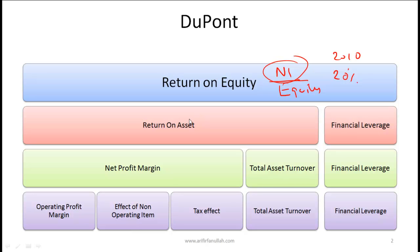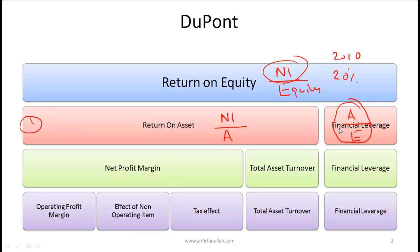The DuPont formula can be expressed in three different ways. The simplest form expresses net income over equity as return on assets multiplied by financial leverage. Return on assets is net income divided by total assets, and financial leverage is assets divided by equity — the assets cancel out leaving net income over equity. This shows whether a high ROE is due to efficiency or high leverage.